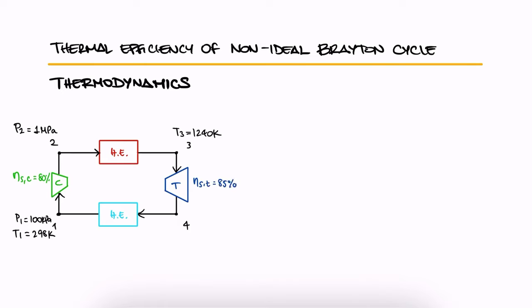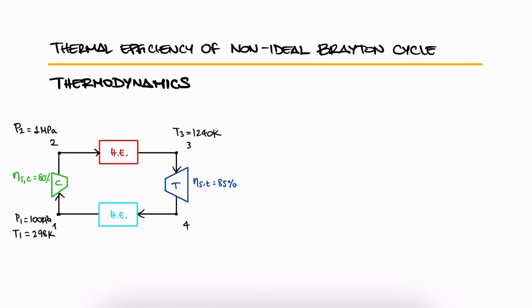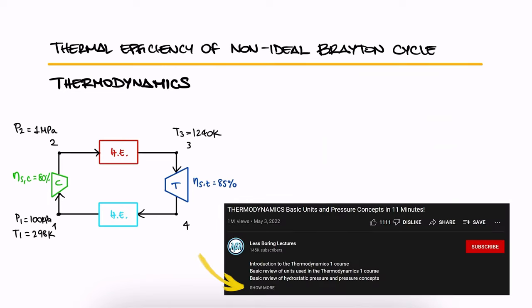As usual, pause here and try solving this yourself before watching the solution. This is the third example for the Brayton cycle main lecture, and it uses concepts from the isentropic efficiency main lecture too. The links to those 11 and 8 minute lectures respectively and all the other lectures of the thermal course are found in the description below.